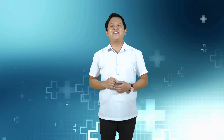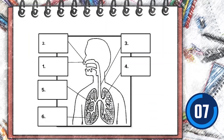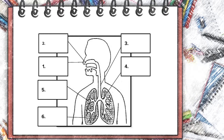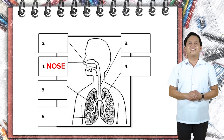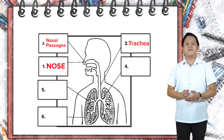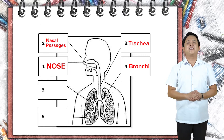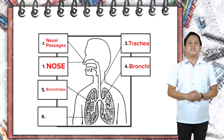To understand this, let's take a look at the system as a whole. The key parts are: nose, nasal passages, trachea, bronchi, bronchioles, and the lungs.